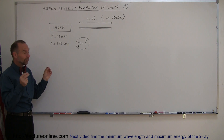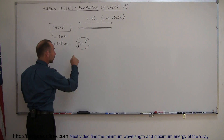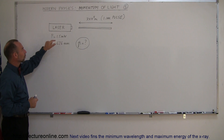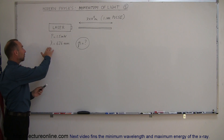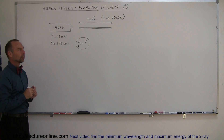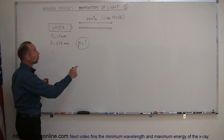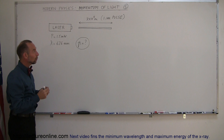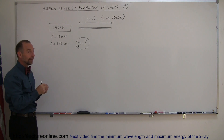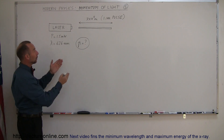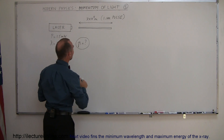That beam of light will have momentum and we're looking for the momentum of that beam of light. The power of the laser is 1.5 milliwatts and the wavelength of the light coming out of the laser is 626 nanometers. First we'll find out how many photons are contained inside that pulse, then we'll figure out the momentum for each photon, and multiply them together to get the total momentum of the beam.